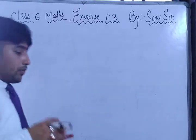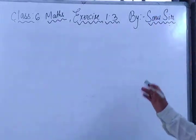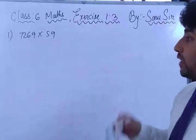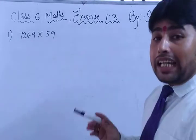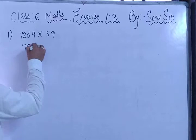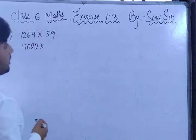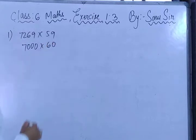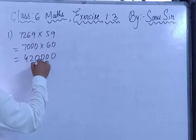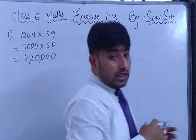I am giving you some practice questions to solve. Estimate the products by finding the nearby value. First question: 7269 × 59. The second digit of 7269 is 2, less than 5, so the nearby value is 7000. The second digit of 59 is 9, greater than 5, so the round figure value is 60. 7000 × 60 = 4 lakh 20,000.